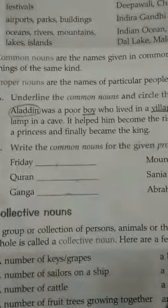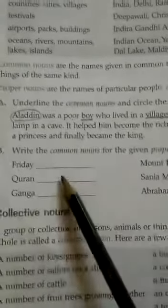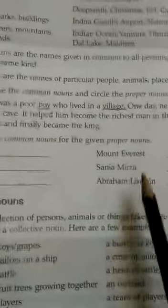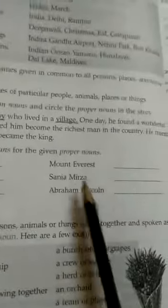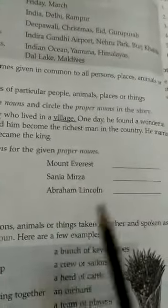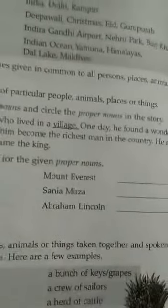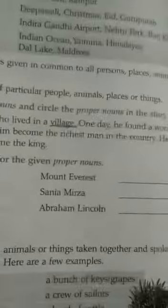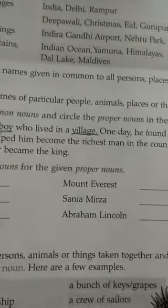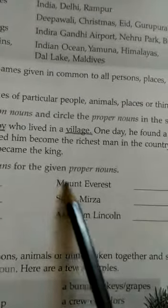Now one day, read by yourself and try to do it on your own without any help — these are also very easy. Sanya Mirza — you have to write here — she is a player. Abraham Lincoln is the president of America, so you can write that. Mount Everest is a mountain, so just write the common noun for the given proper noun.